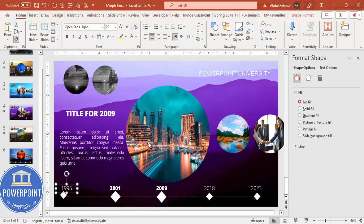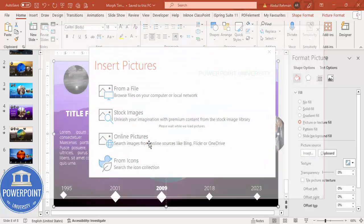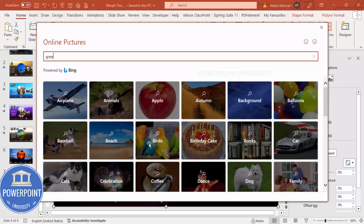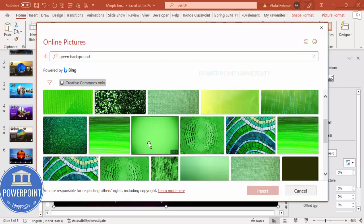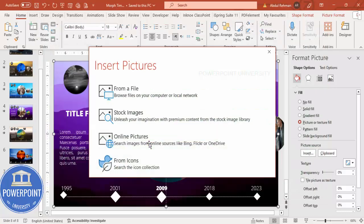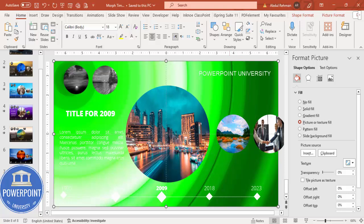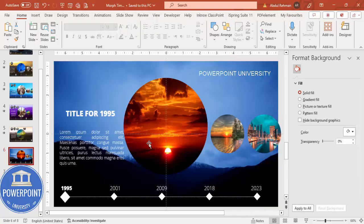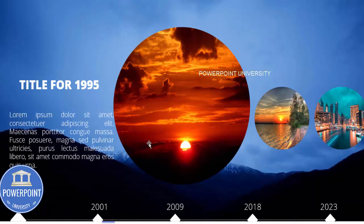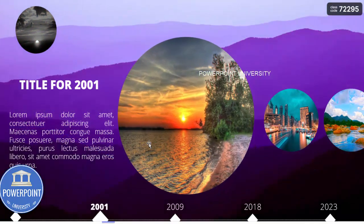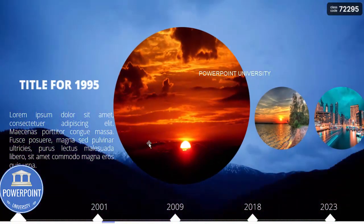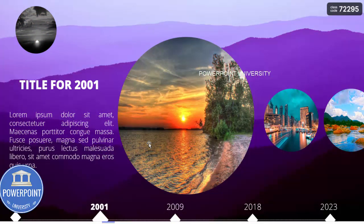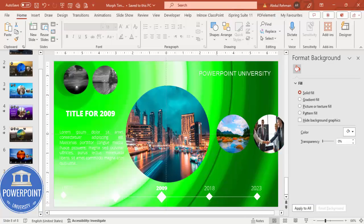Use Format Painter to make the 2009 year label bold, and return others to the normal style. You can change the background image — for example search 'green background' and choose a suitable one. When you play the slideshow, you can see 1995, then click to go to the second slide, and again to reach 2009. You can press back to return to previous slides. Continue duplicating and following the same steps for the remaining years.